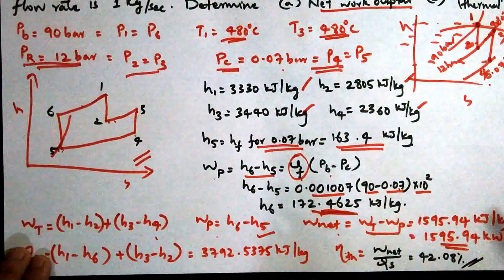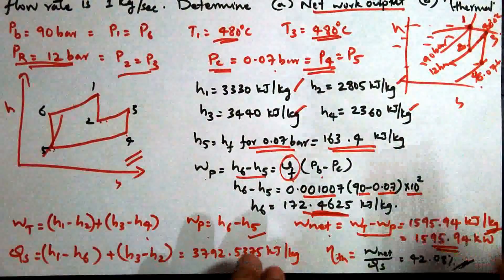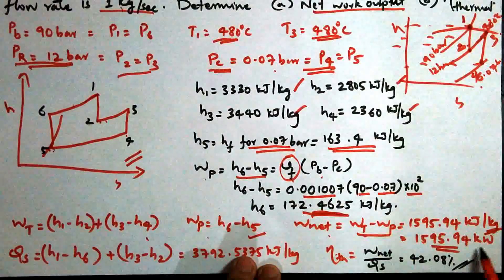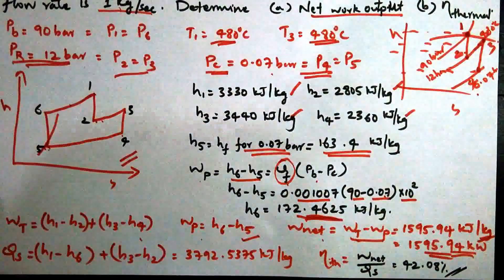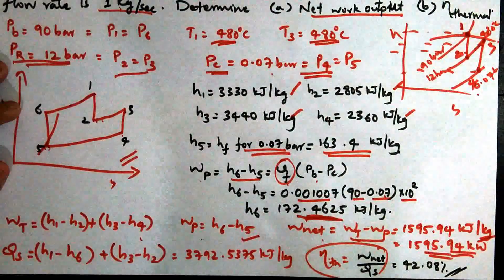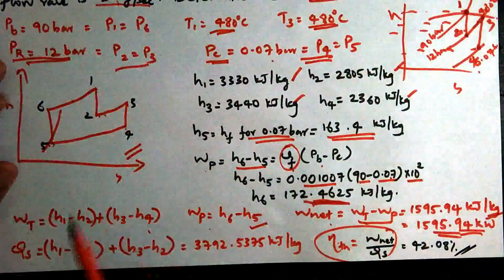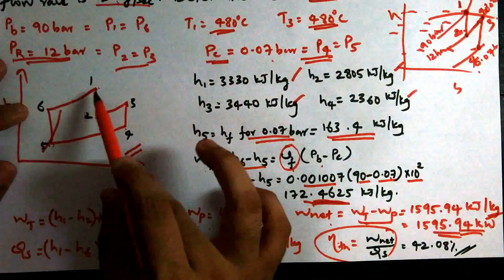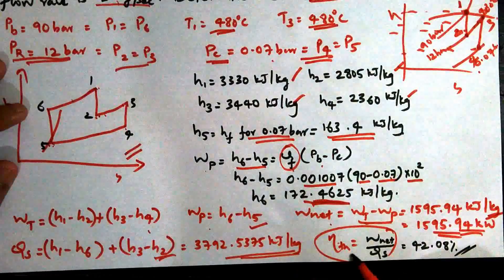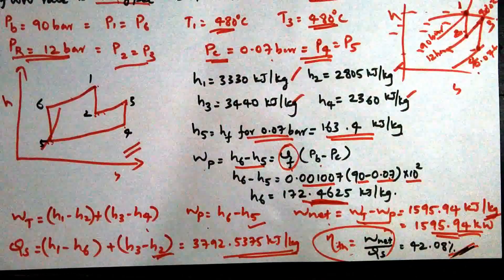The net work output W-net equals W-turbine minus W-pump, which gives a value of 1595.94 kilojoules per kilogram. For a mass flow rate of 1 kilogram per second, the power output is 1595.94 kilowatts. The heat supplied equals (H1 minus H6) plus (H3 minus H2). Substituting all the enthalpy values, the thermal efficiency equals W-net divided by heat supplied, giving a final answer of 42.08 percent.